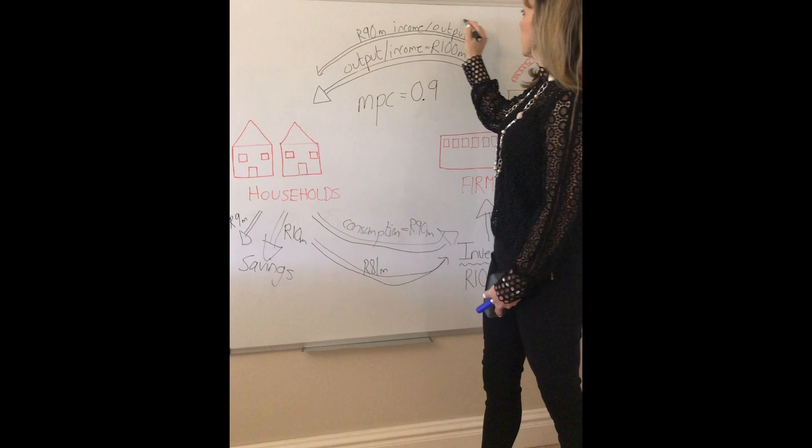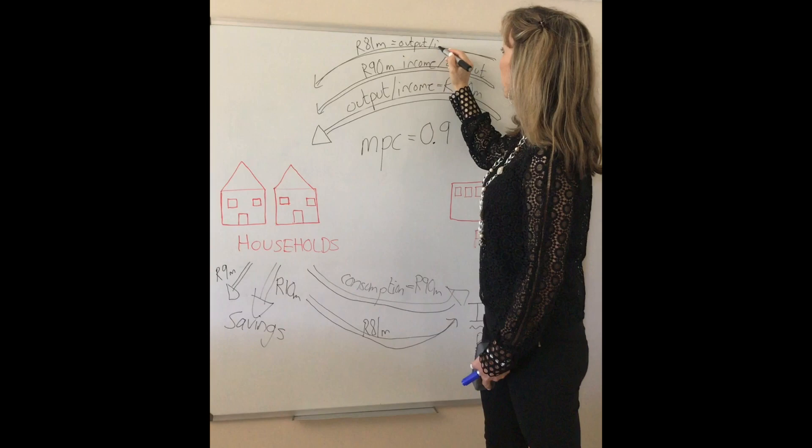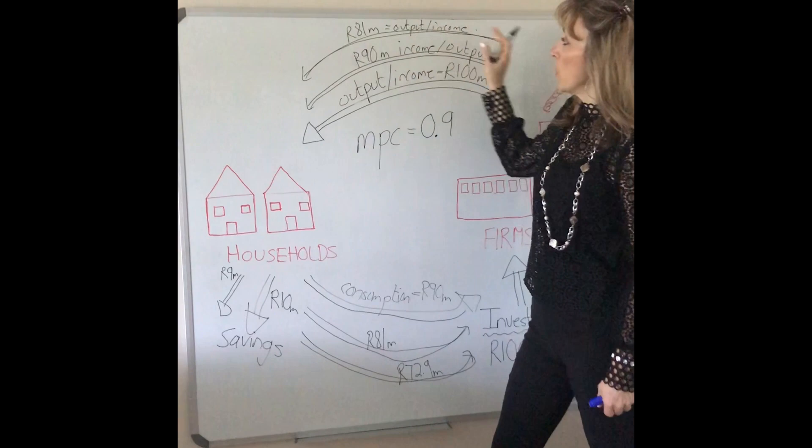So once again you've got another flow of 81 million worth of output or income. So you're going to have 81 million rands worth of output or income that's now going to flow back to households.